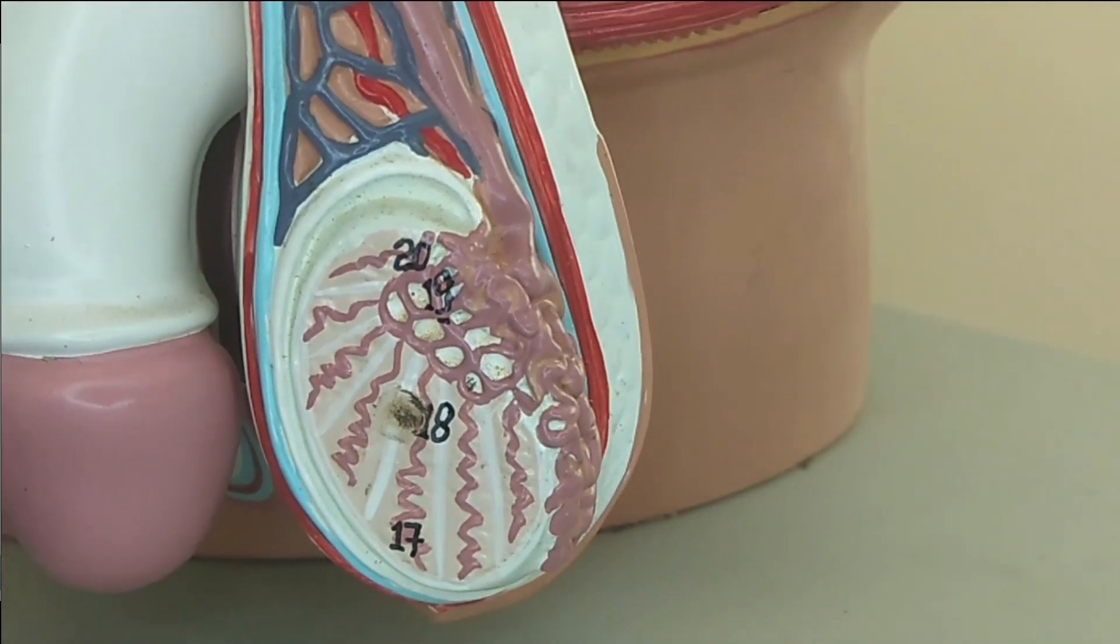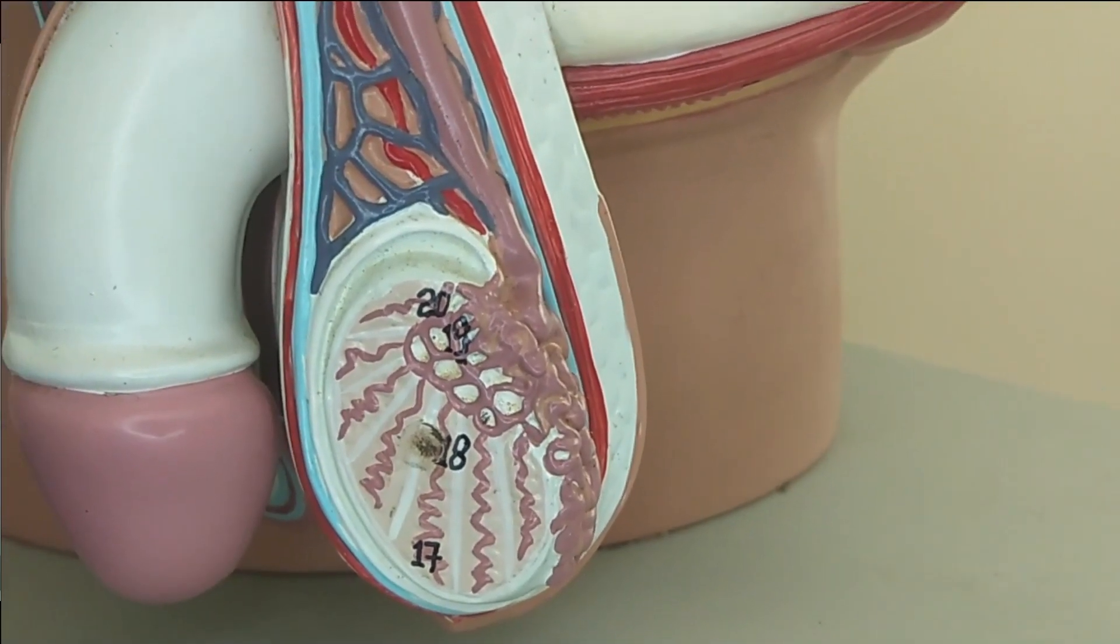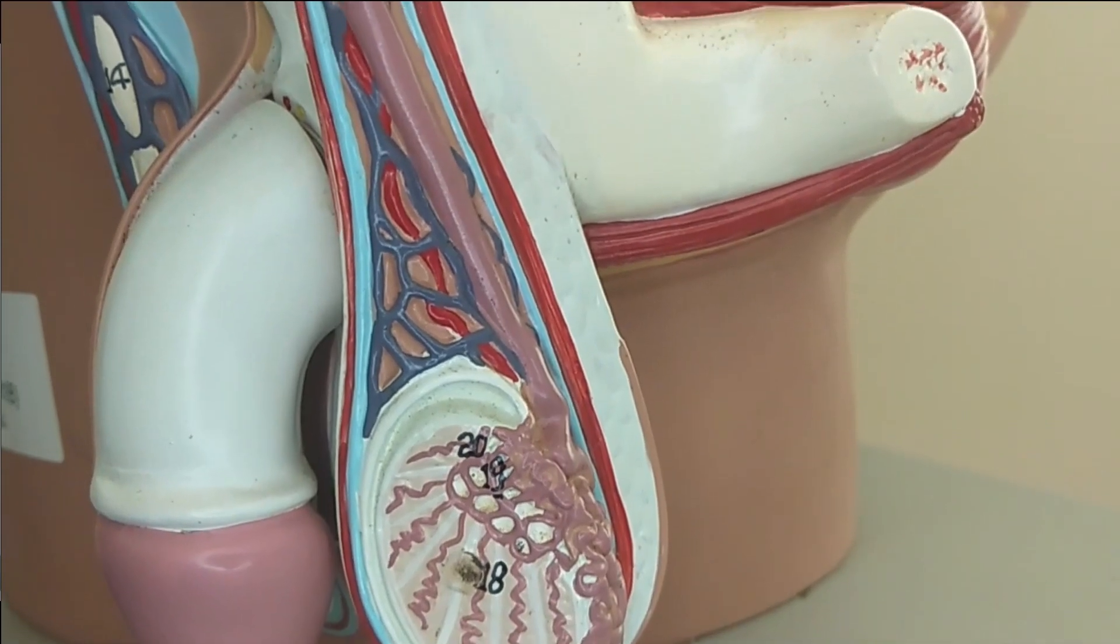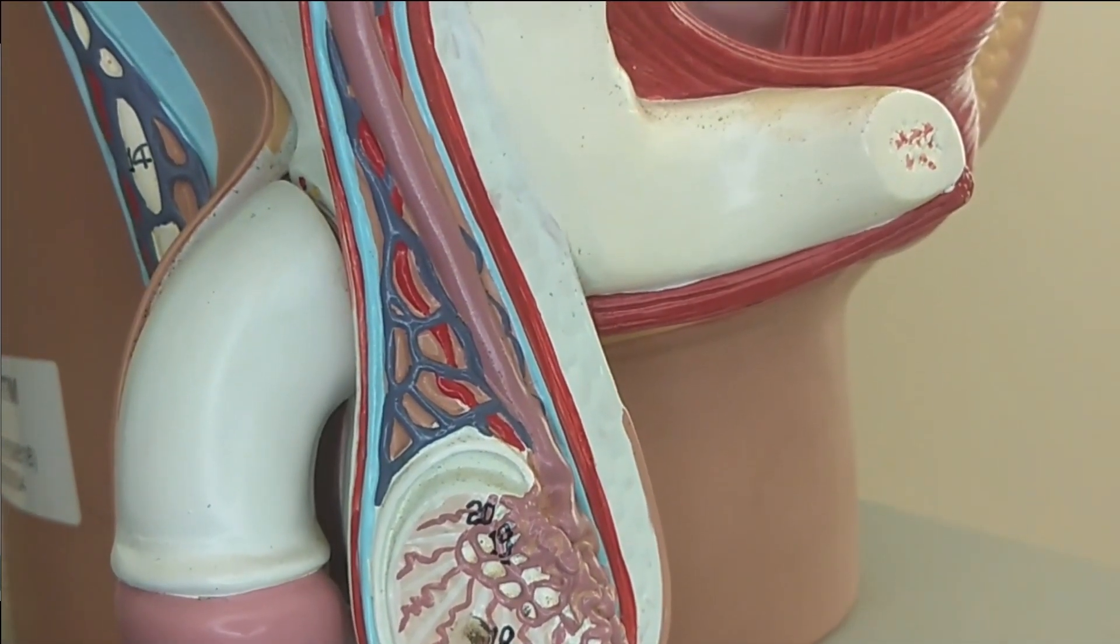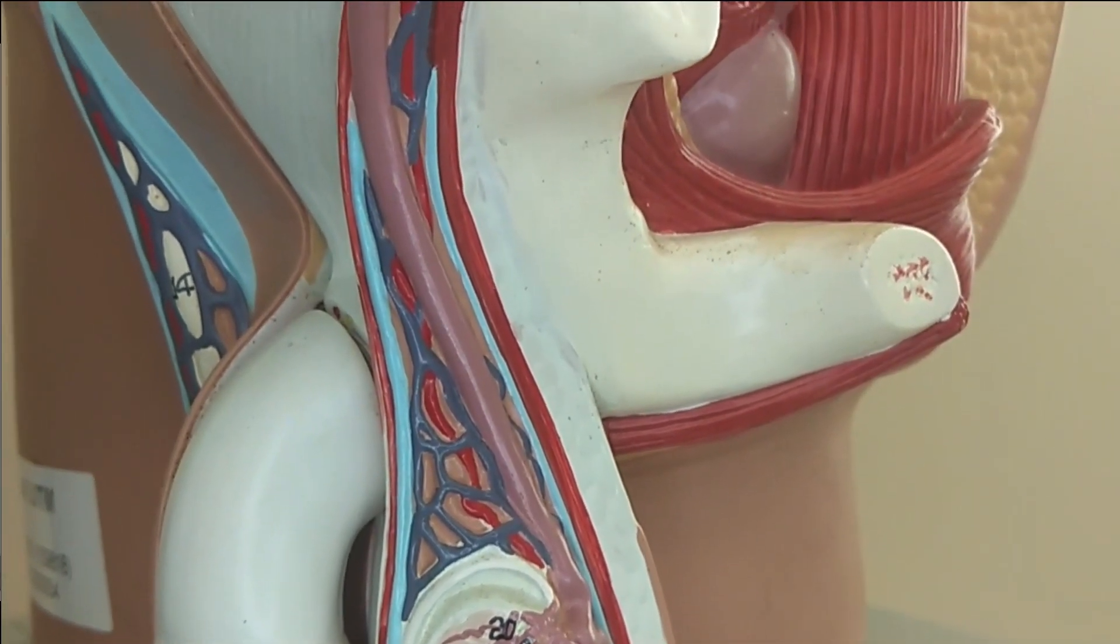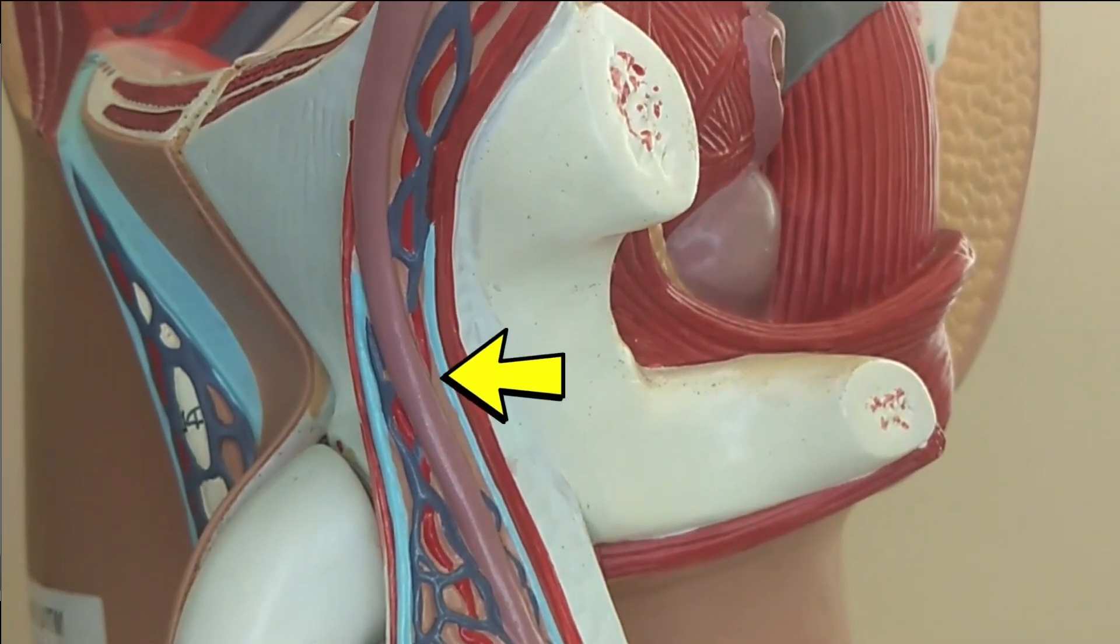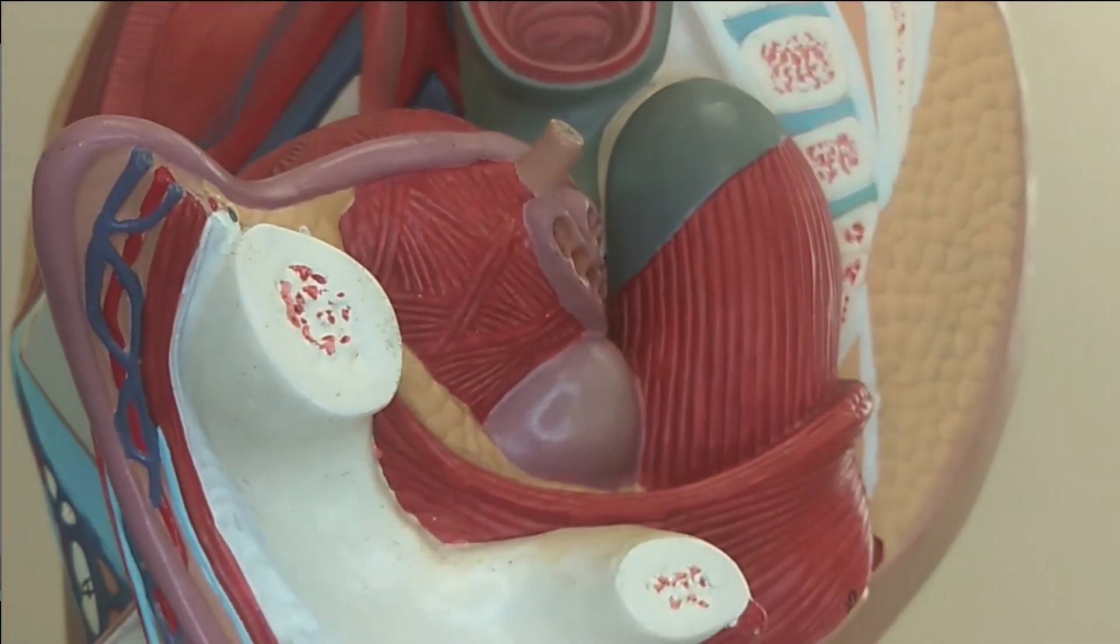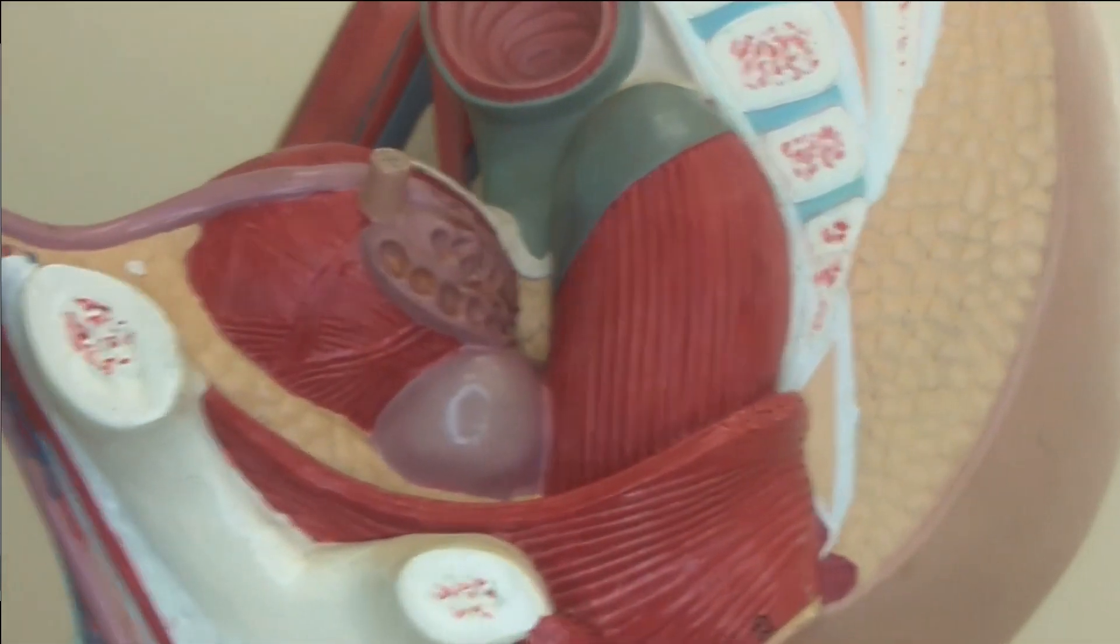Sperm is produced inside seminiferous tubules and then transferred into the epididymis by pressure of testicular fluid. From the epididymis, sperm will travel to the vas deferens that runs upward to the pelvic cavity and passes above the urinary bladder.